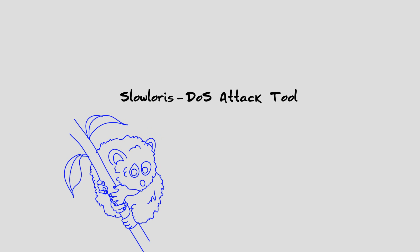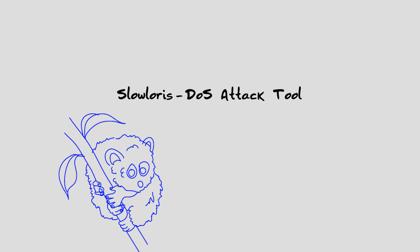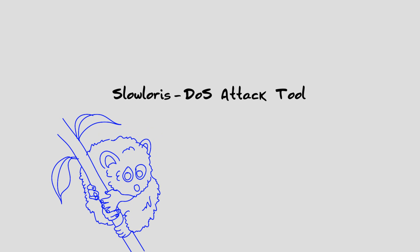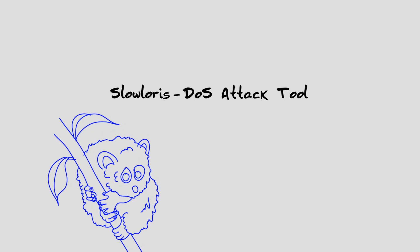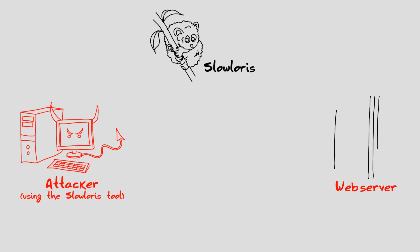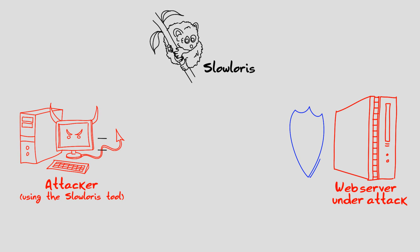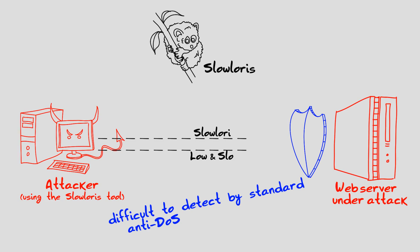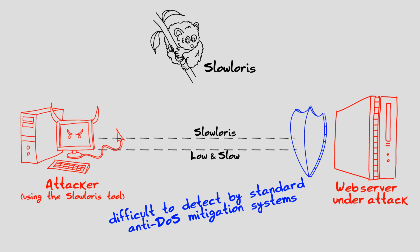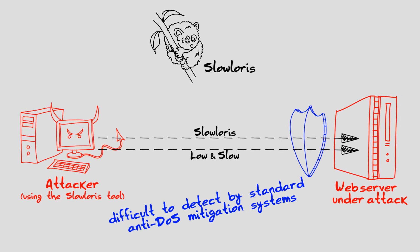Slow Loris, named after the slow-mannered primate found in Asia, is a low and slow attack tool that generates a denial of service attack. It is categorized as a low and slow attack tool because it generates a slow rate and low volume of traffic, making it difficult to detect by standard anti-DOS mitigation systems. It is one of the first known slow rate DOS tools developed.